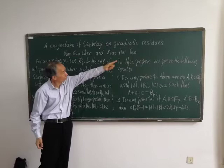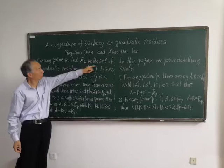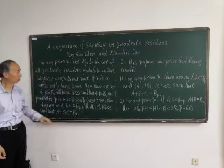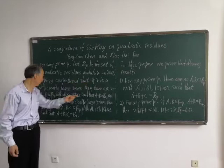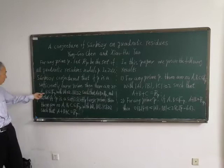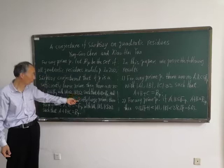For any prime P, let R_P be the set of all quadratic residues modulo P. In 2012, Sárközy conjectured that if P is a sufficiently large prime, then there are no subsets A and B with cardinality more than or equal to 2, such that A plus B is equal to R_P.